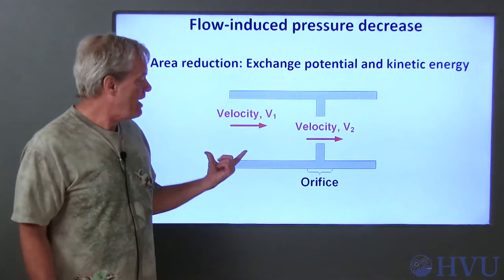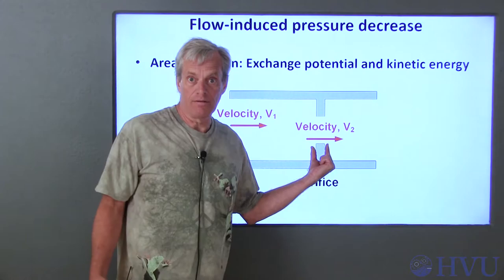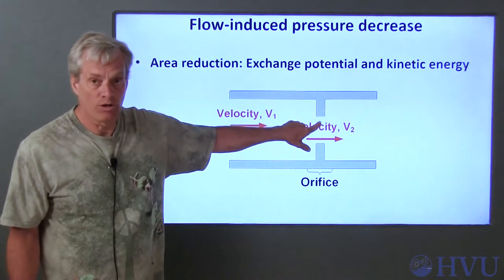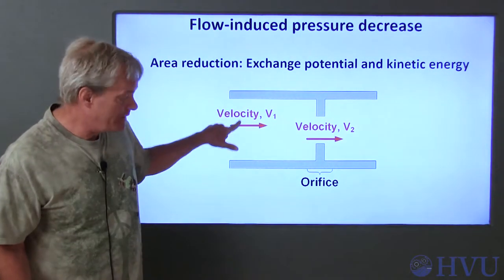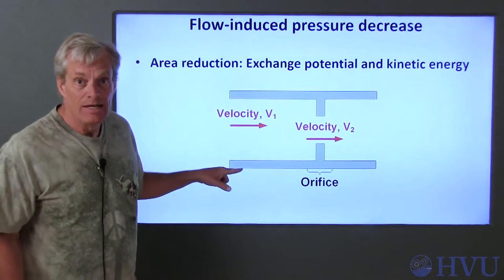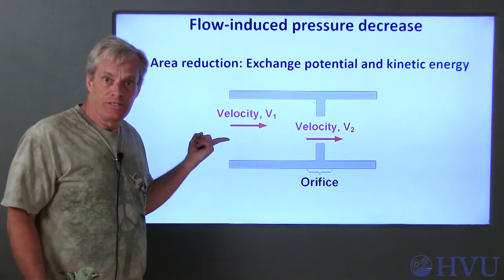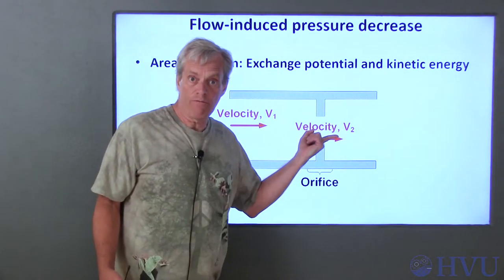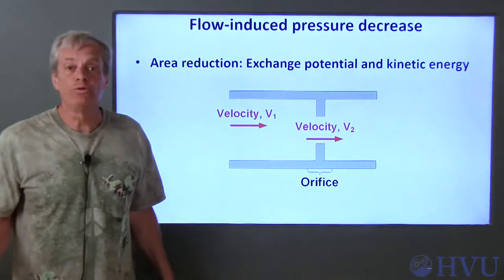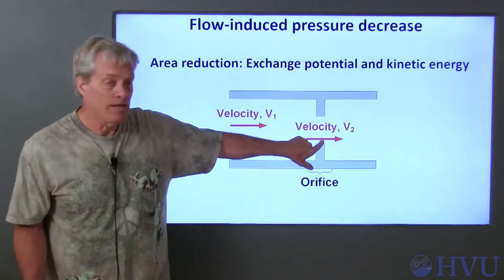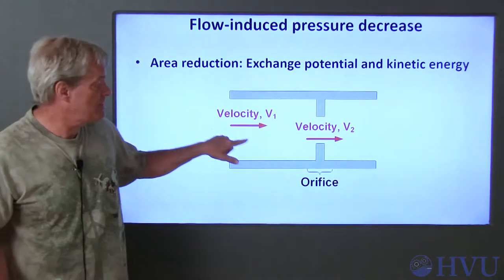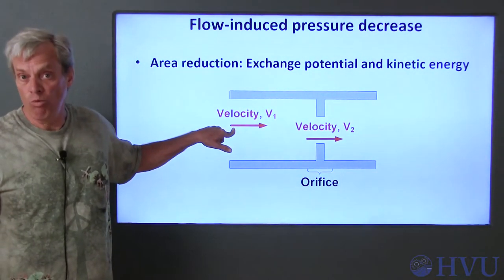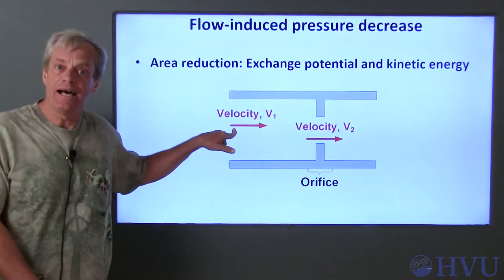Suppose we have a duct with an orifice in it. The orifice has a smaller flow area than the duct. Since any fluid that enters the duct also has to go through the orifice, the fluid velocity at the orifice, V2, has to be higher than the velocity, V1, in the duct.